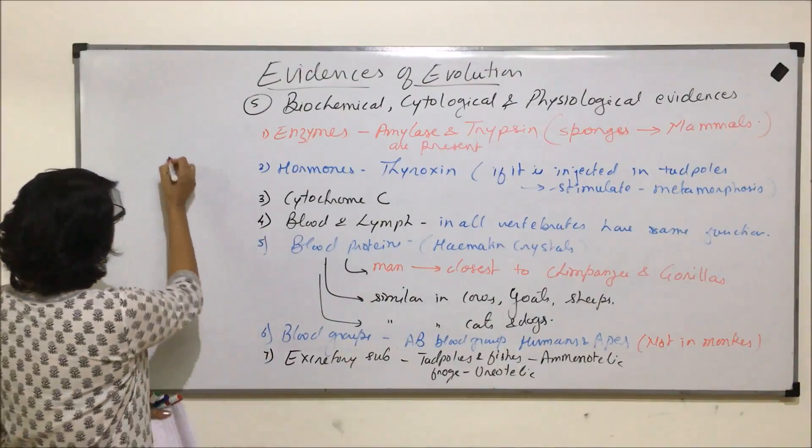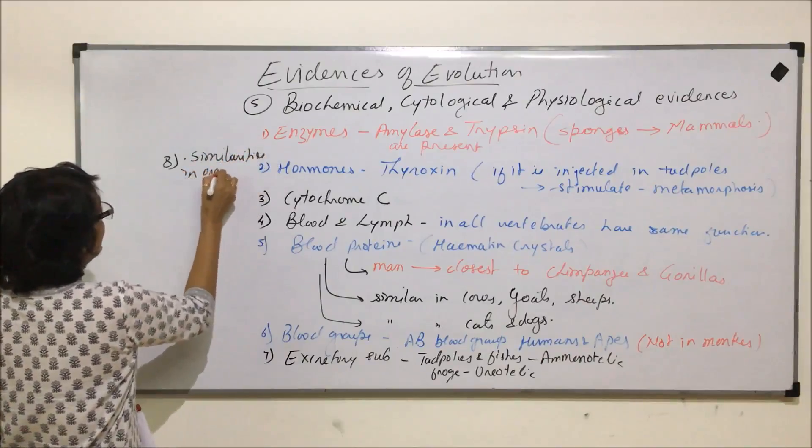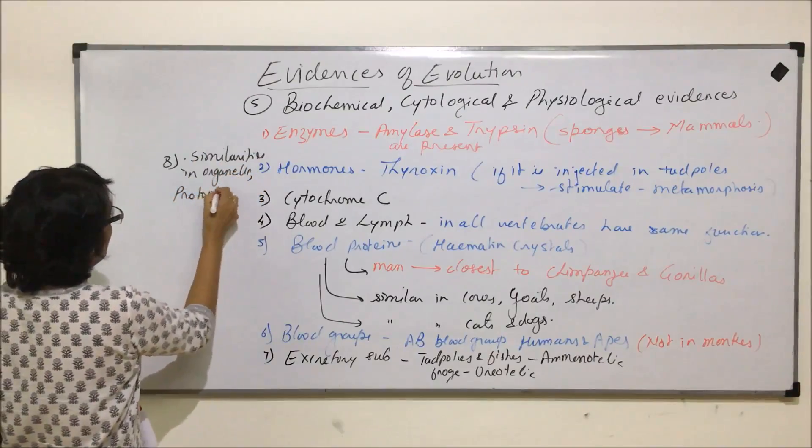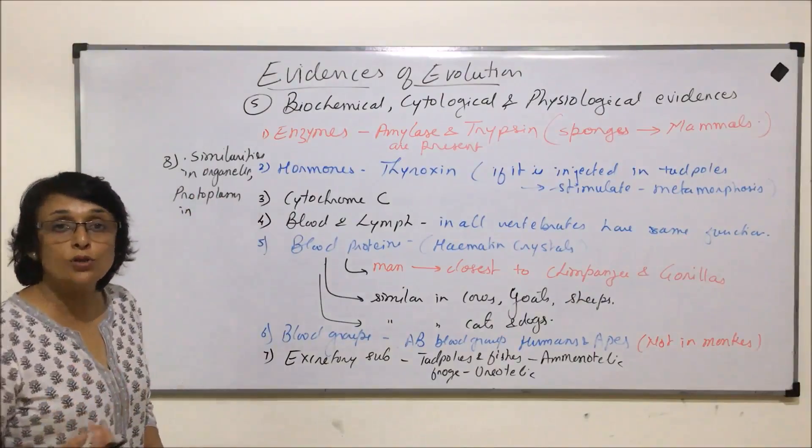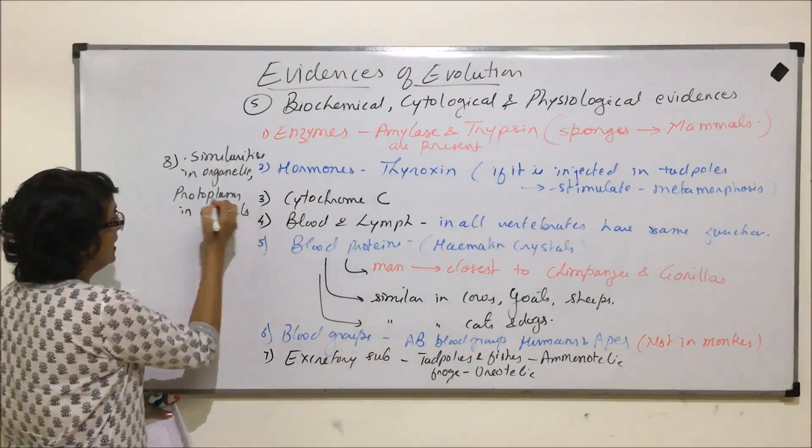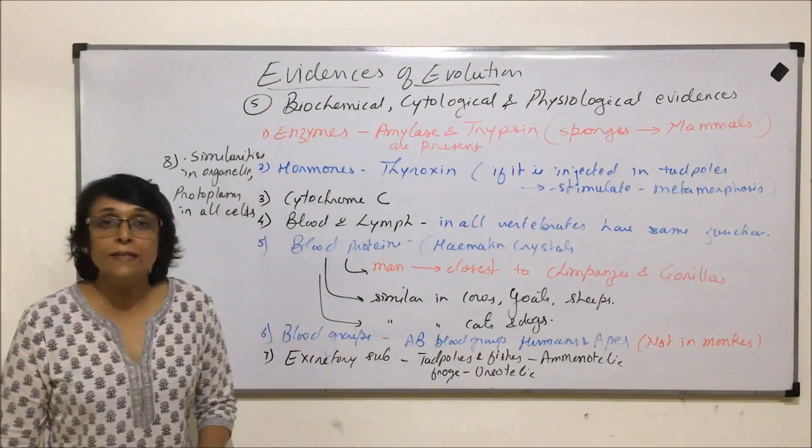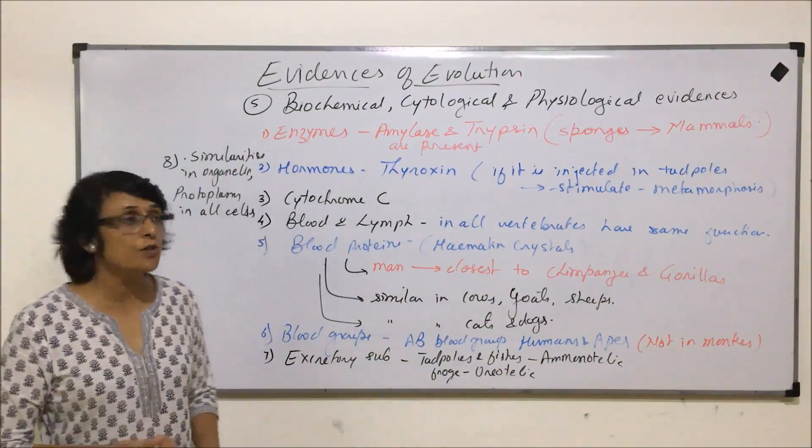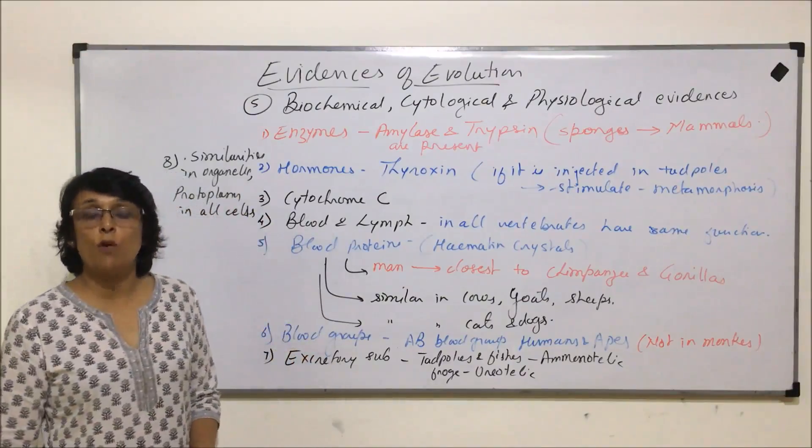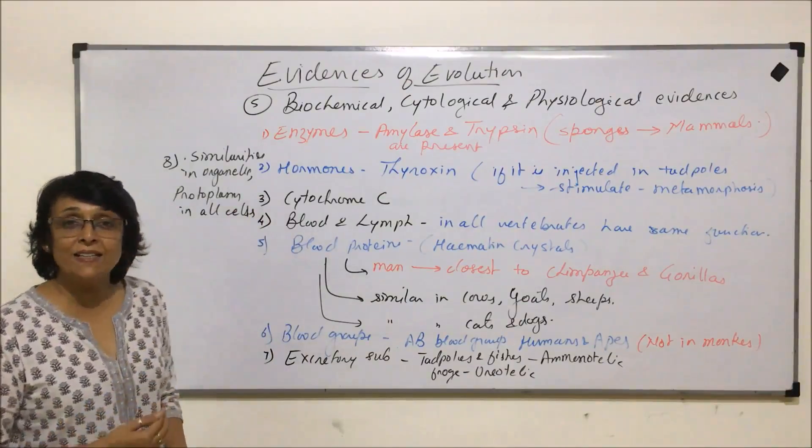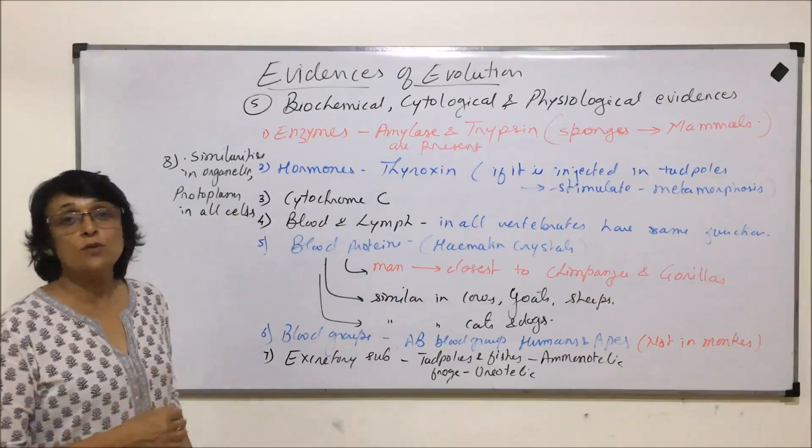Then there are similarities, the eighth point - there are similarities in organelles, protoplasm, in almost all cells. So whether you're talking of a primitive type of eukaryotic cell and the most evolved type of eukaryotic cell, in all cells we can say the organelles which are present, like mitochondria in the very simple yeast cell or the mitochondria in higher organisms, they show similar structure. They are performing the same kinds of functions and protoplasmic content is the same. So all these evidences help us understand that all these complex organisms or most evolved organisms which are existing today have similarities with the very old or not so evolved organisms. Like in case of sponges, they also have the same enzymes as we do have.